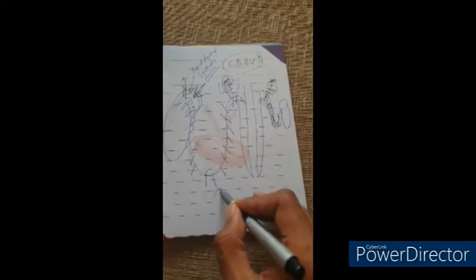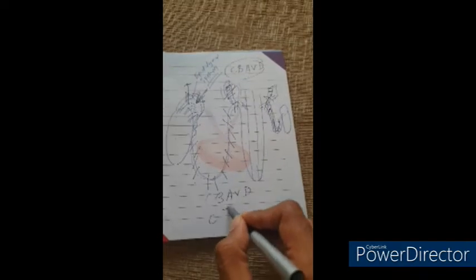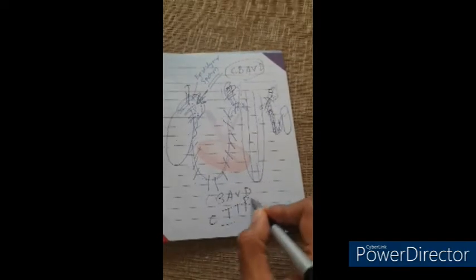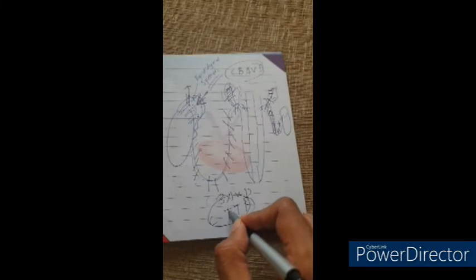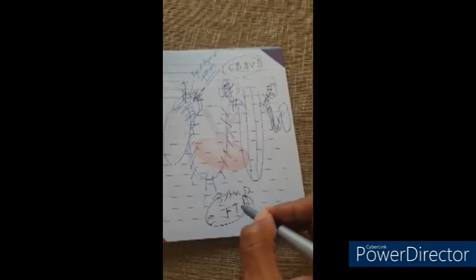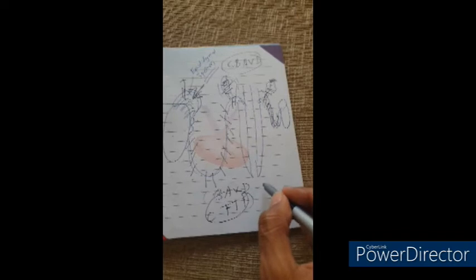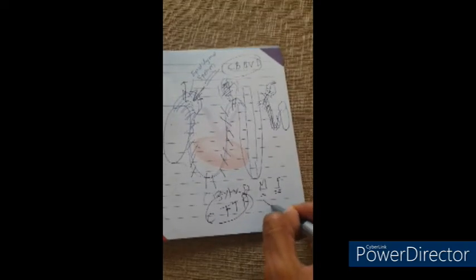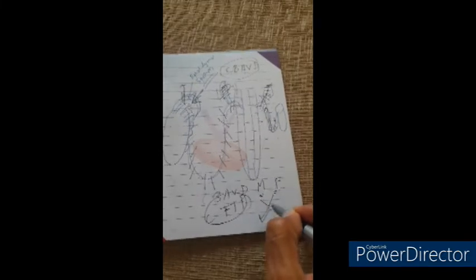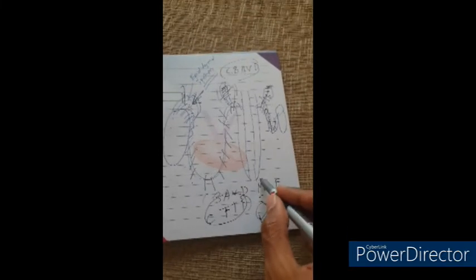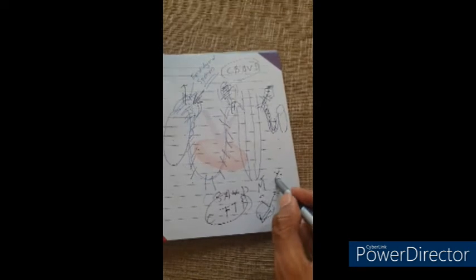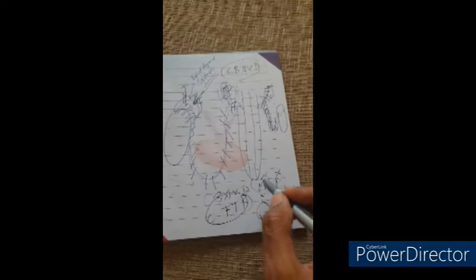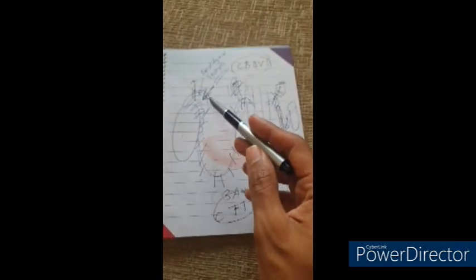A word of caution: this CBAVD is due to a genetic defect in the cystic fibrosis transmembrane region. There is a genetic defect. This genetic defect has to be looked into in both partners, male and female. If both carry the genetic defect, there's a high chance the child will also have a similar problem.